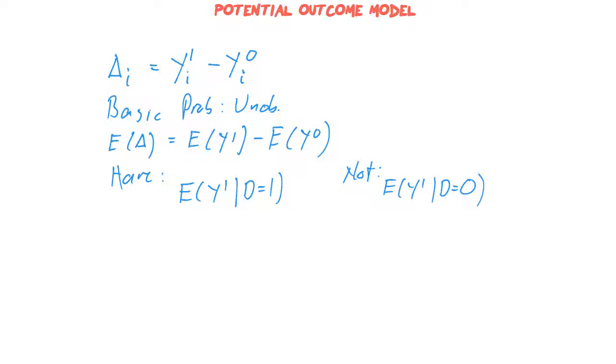What else do we have? We have the following information: we know the value of y0 for those people who did not get the intervention. We know that. We do not know the value of y0 for the people who did get the intervention.